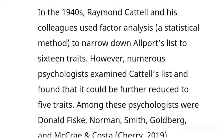In the 1940s, Raymond Cattell and his colleagues used factor analysis — a statistical method — to narrow down Allport's list to 16 traits. However, numerous psychologists examined Cattell's list and found that it could be further reduced to only 5 factors.